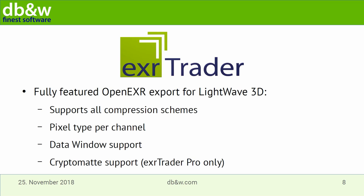XRTrader is our second oldest plugin, initially developed as a test to see if we could get OpenEXR to work within LightWave, and it quickly turned into a nice layered exporter. This year we added XRTrader Pro, which also allows you to save crypto mattes. The main difference is that XRTrader saves buffers as LightWave produces them, whereas XRTrader Pro can also create its own buffers or modify buffers in ways you can't do by image processing alone — and the first example of that is the crypto mattes.